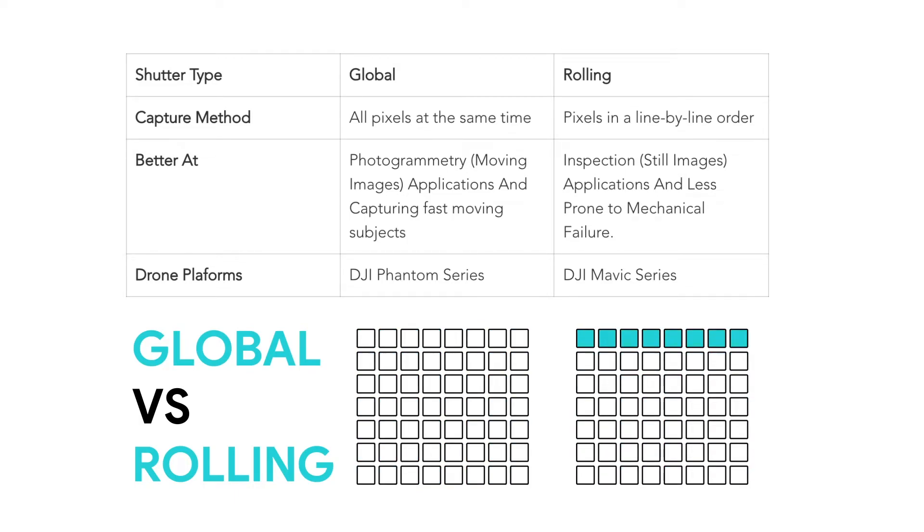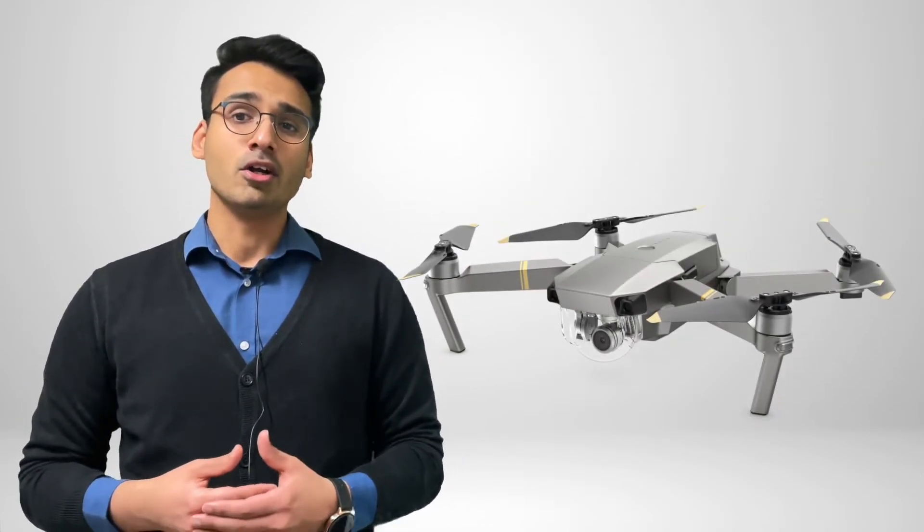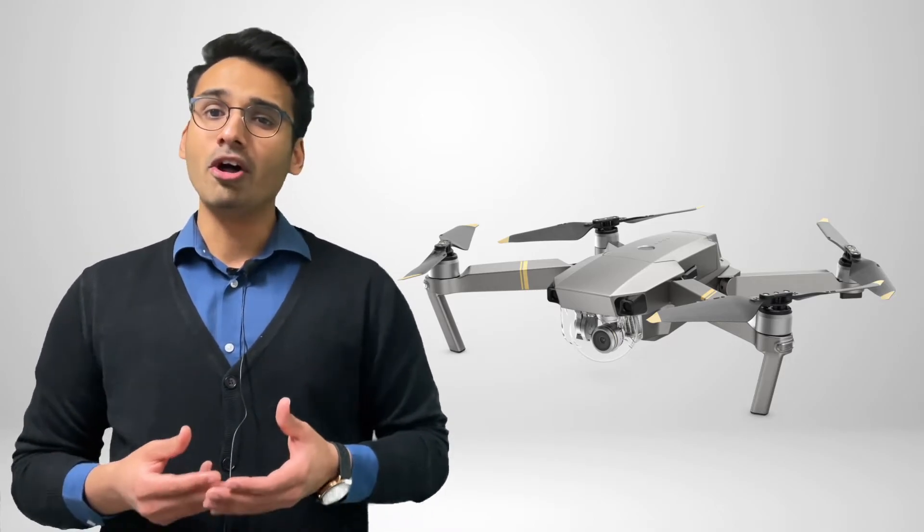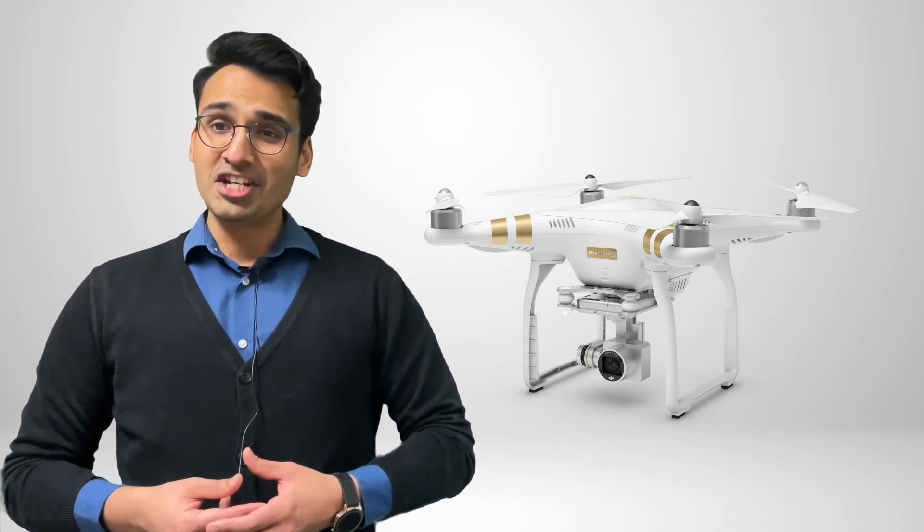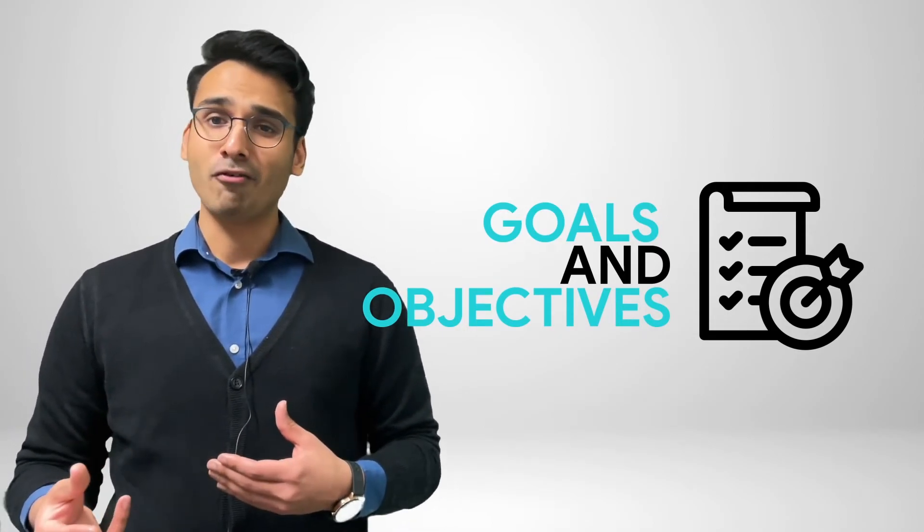It's important to mention that your choice of drone platforms should not be singularly based on whether or not the platform supports a global mechanical shutter. The DJI Mavic series for instance does not support a global mechanical shutter but incorporates a foldable body design making it a lot more portable than its phantom cousins. As with any drone applications it's important to take the full picture into account, your goals and objectives before deciding on investing in a drone platform.